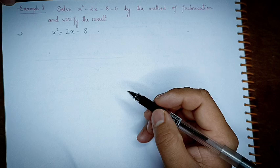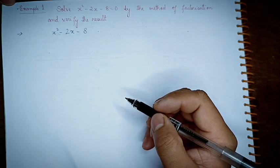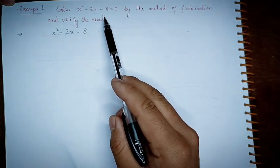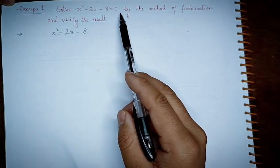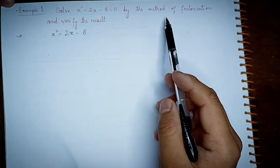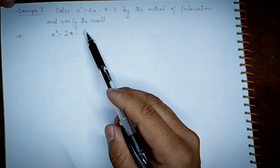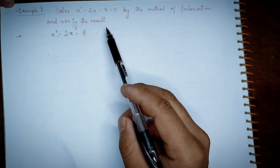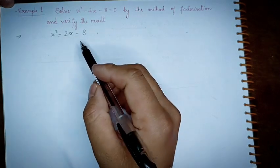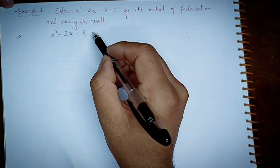Hello, I am going to show you how to solve this problem. This is example number 1: solve x² - 2x - 8 equal to 0. The first step is to write the factors of the constant value, and then verify the value. So this is x squared minus 2x minus 8 equal to 0.